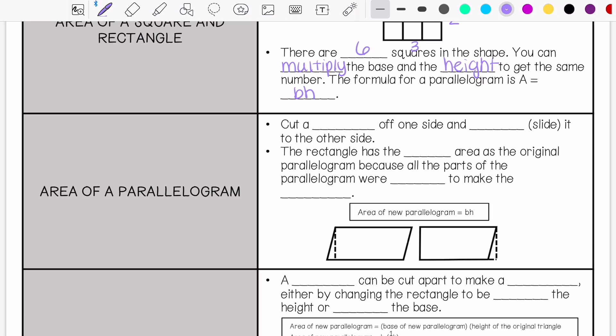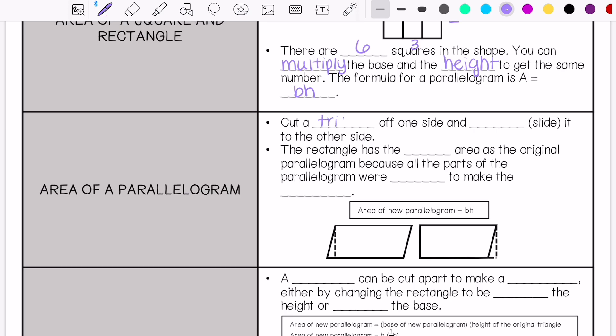For a parallelogram that doesn't have 4 right angles, we are going to cut a triangle off of one side and translate it, which means to slide it to the other side.